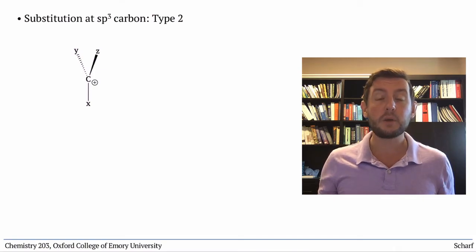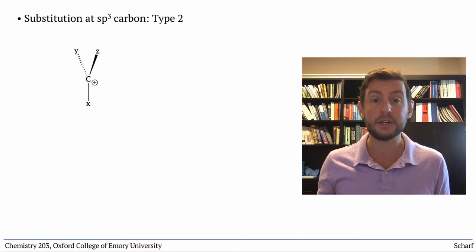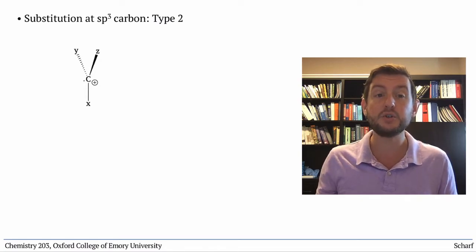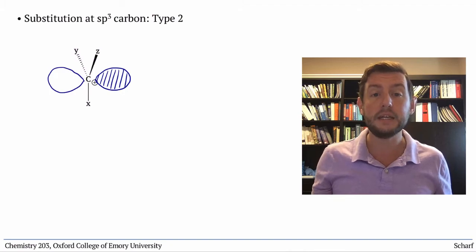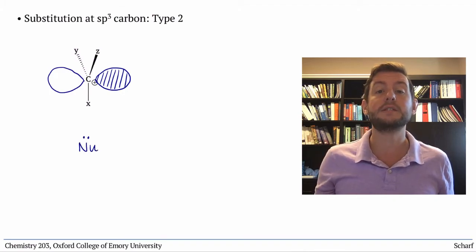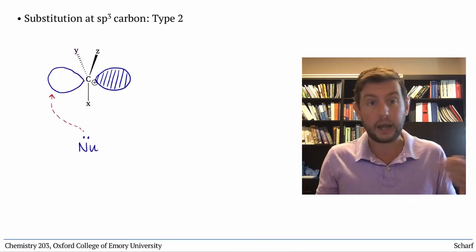Because the carbocation is trigonal planar and its empty P orbital has two equal sized lobes on either side of that plane, there's an equal chance that the nucleophile will attack from either side.